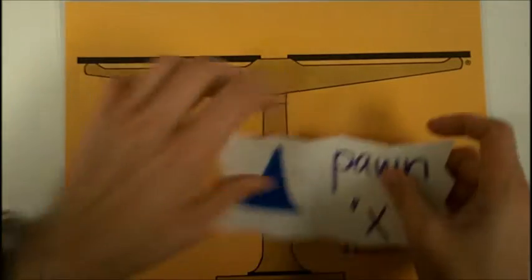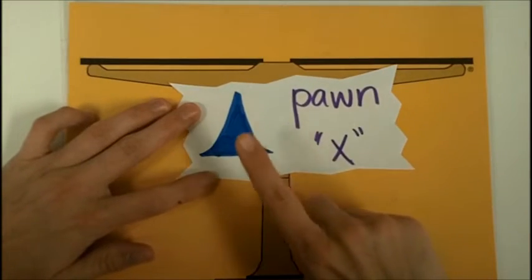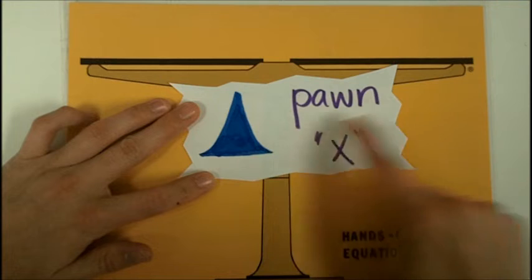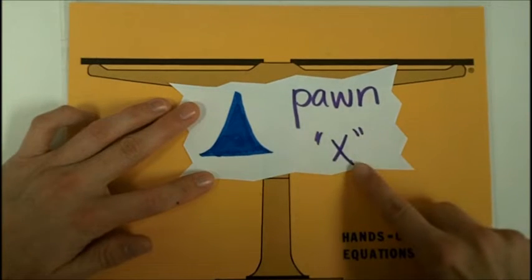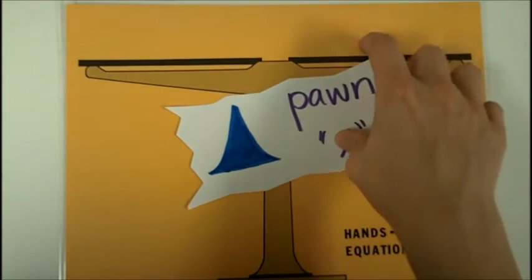In this lesson, the main point is to see that the pawn, this blue shape, has a special name, x, and we can write equations using this particular variable.